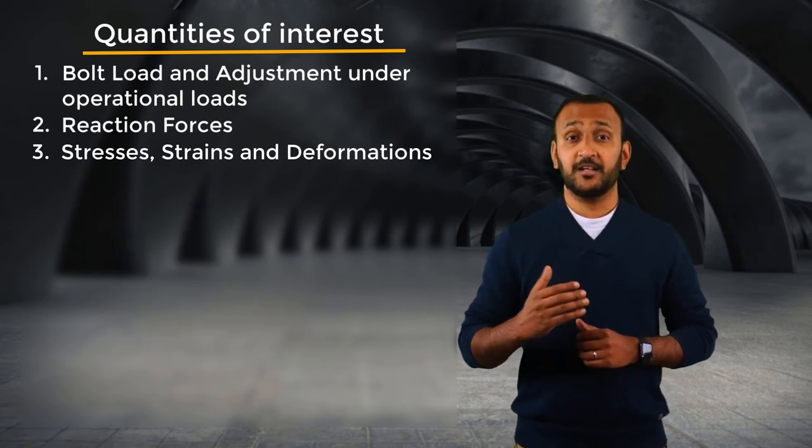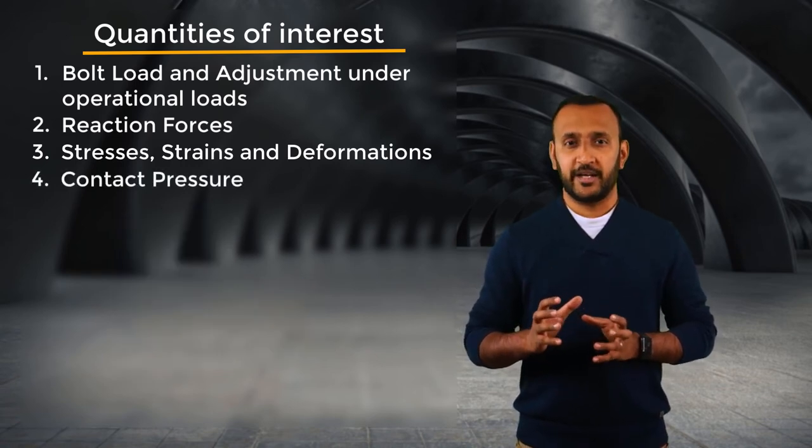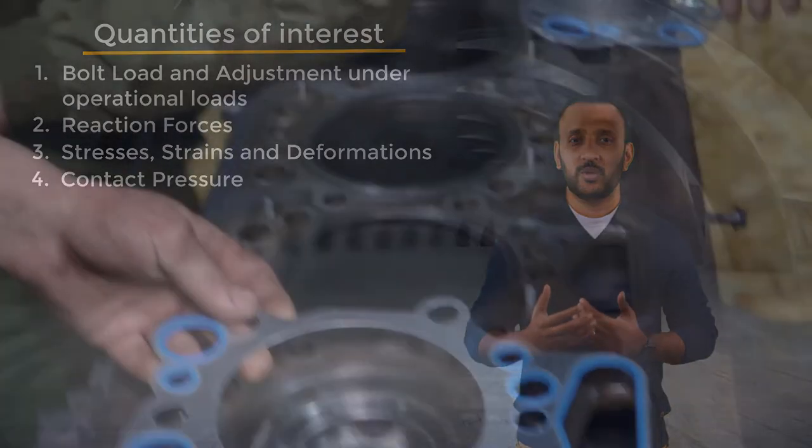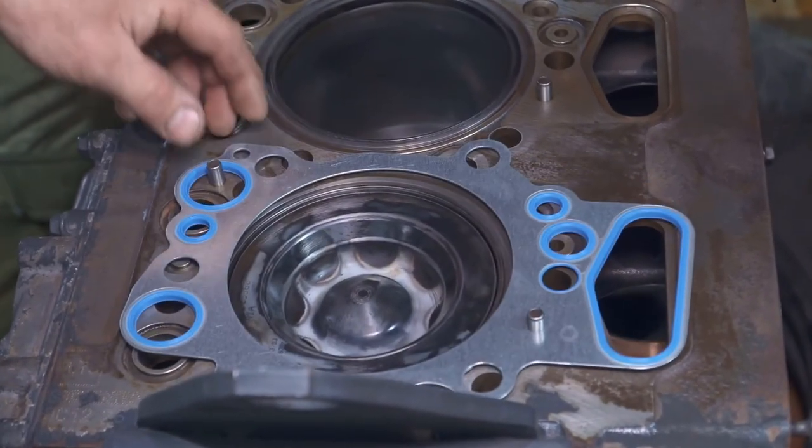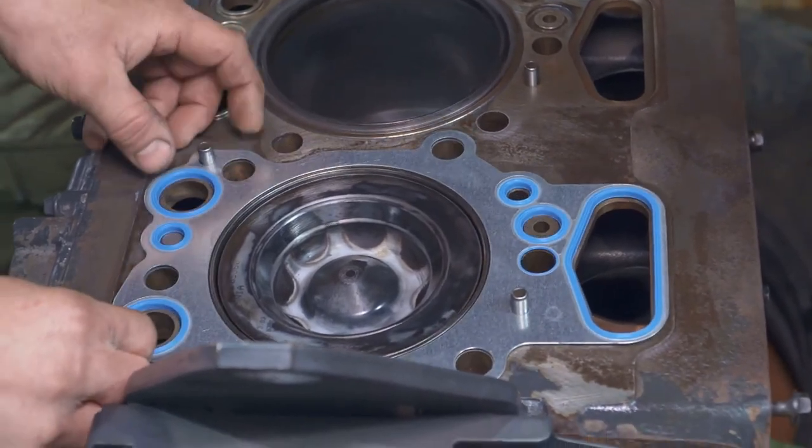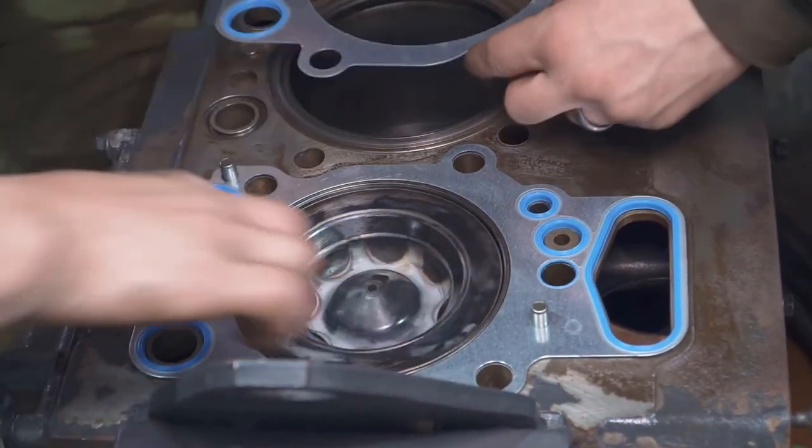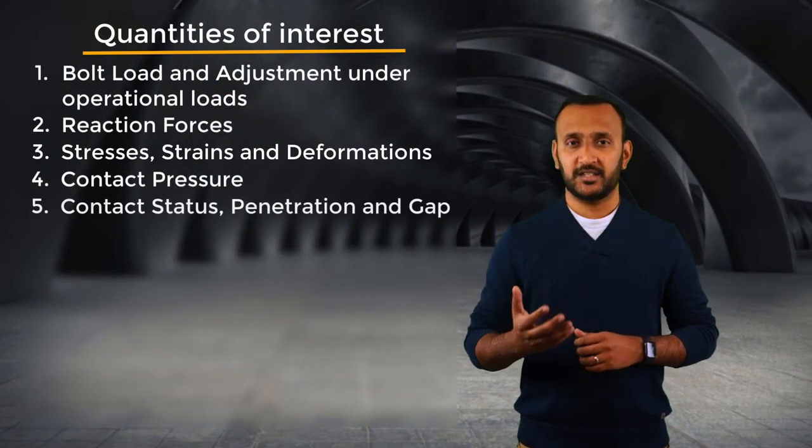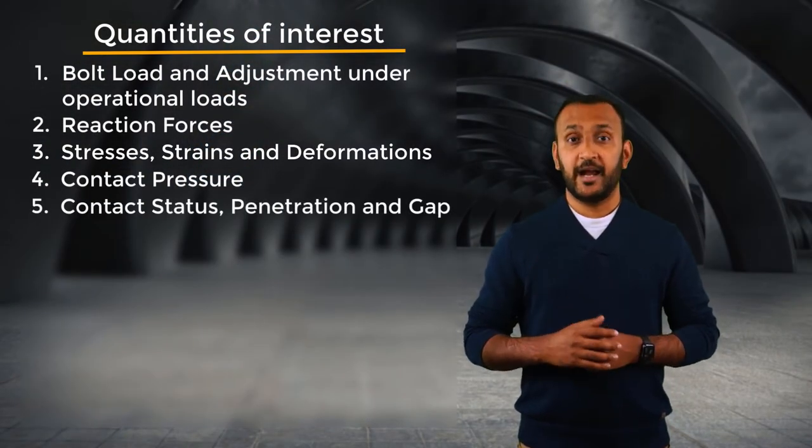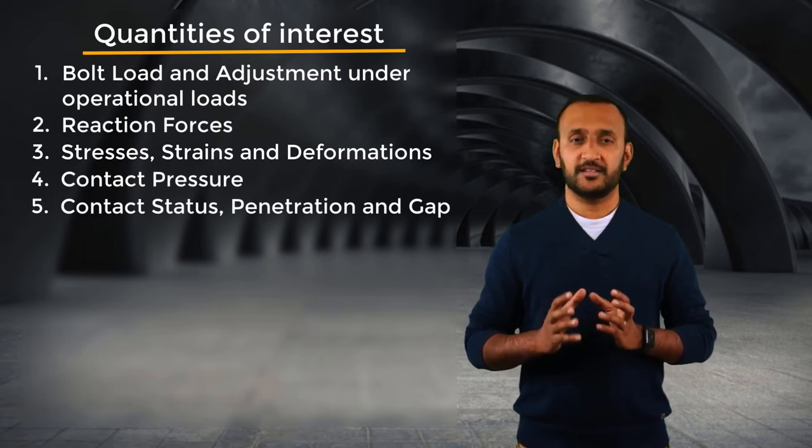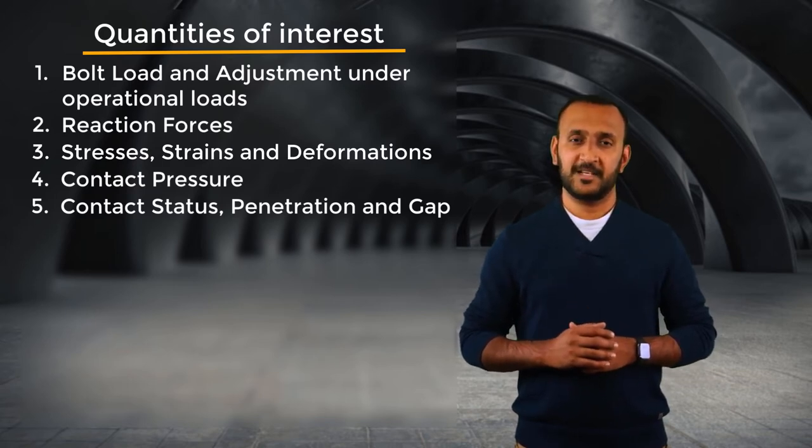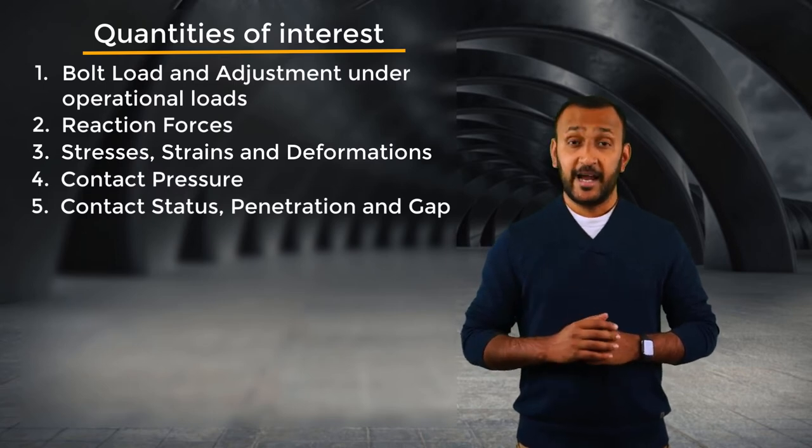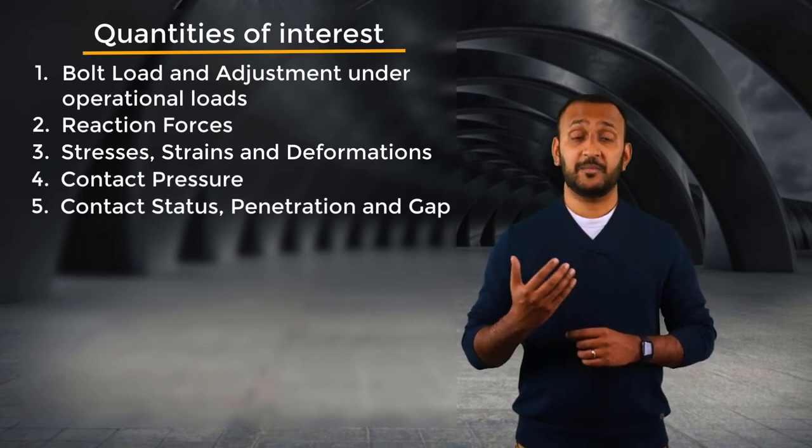Contact pressure is another quantity that we commonly check in these analyses. It's typically used to assess the performance of seals and gaskets which are created due to preloaded bolts. Other contact quantities such as contact status, penetration and gap are also very handy in verifying the results. Now, let's learn in detail about these quantities and see how they are extracted in ANSYS Mechanical.